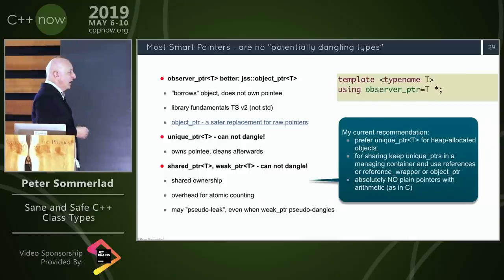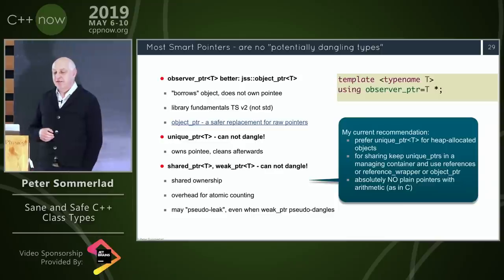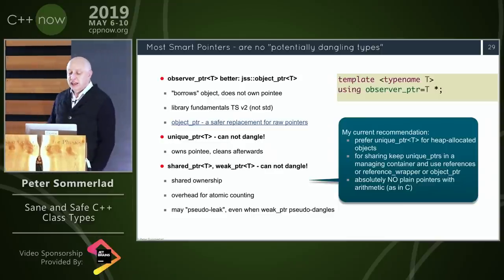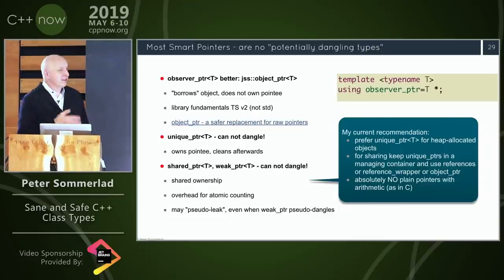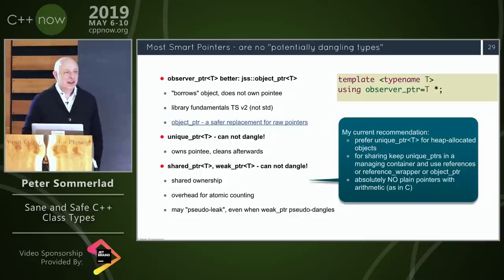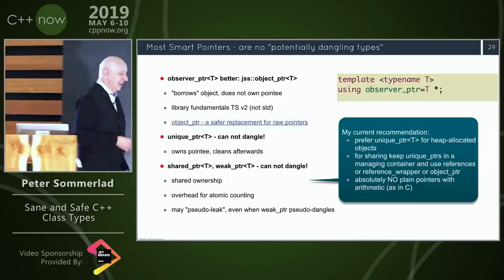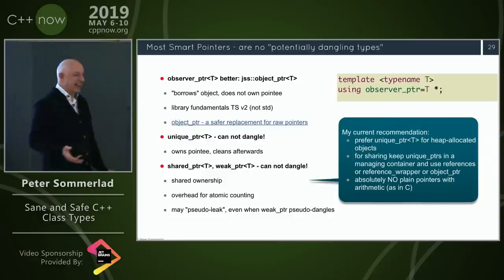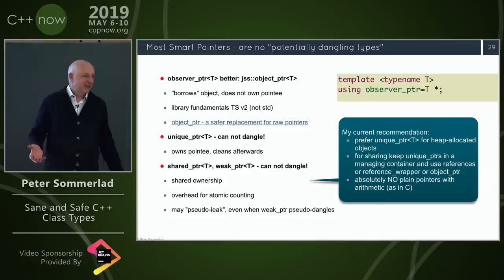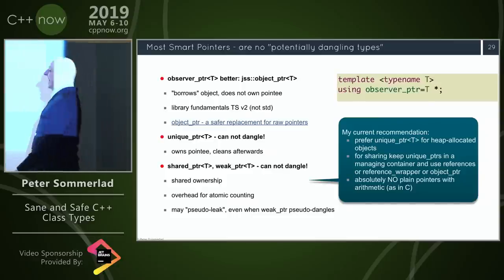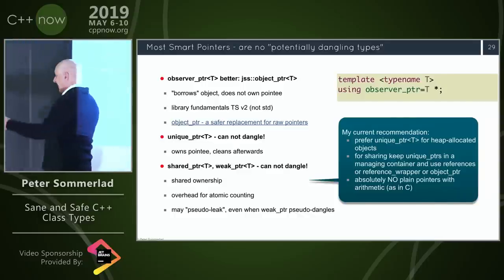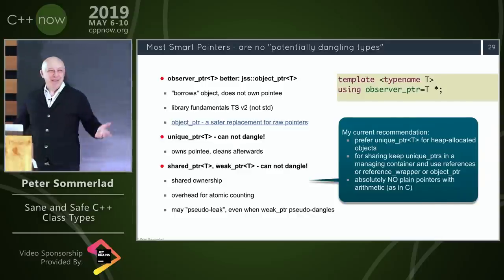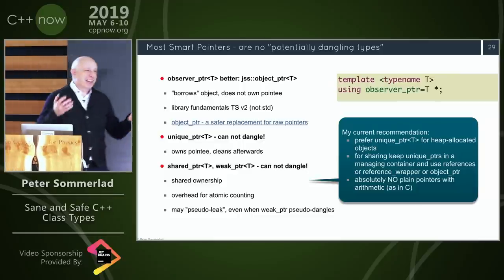Shared and weak pointers cannot dangle, but you might have pseudo-leaks — memory that's kept alive in a cycle and never freed. Circular object dependencies are a problem even shared_ptr cannot solve. Deliberate malpractice can always happen — if you have people running around with guns, you can't prevent all harm.